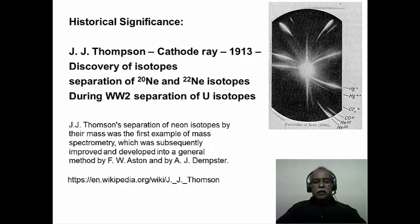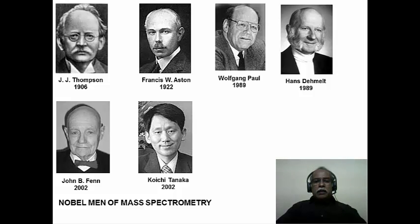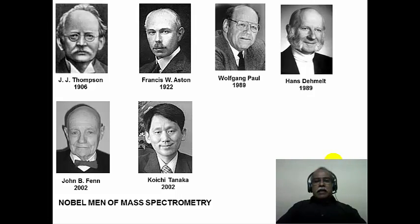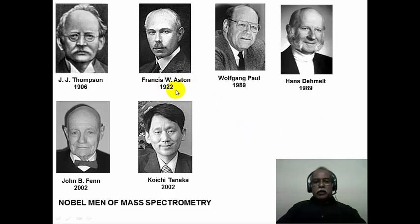This technique was further improved and developed by his co-workers Ashton and Dempster. J.J. Thomson received the Nobel Prize in 1906 for his contributions on cathode ray tubes and the discovery of the electron. Francis Ashton continued the mass spectrometry work developed by Thomson. Ashton discovered several isotopes of various elements in the periodic table and received the Nobel Prize in 1922.